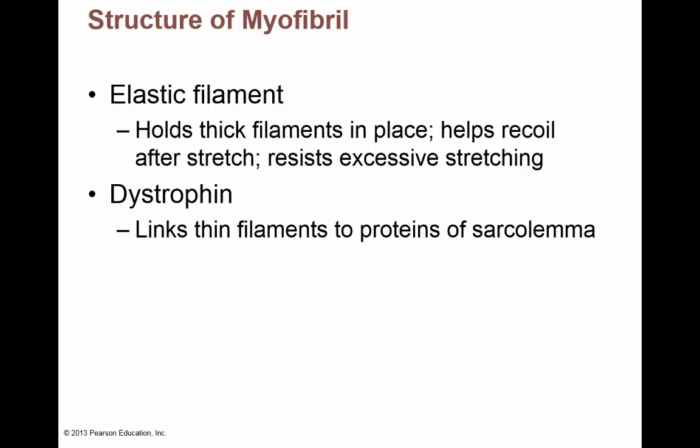The elastic filament is titin — it helps hold thick filaments in place and helps recoil after stretching, resisting excessive overstretching of muscles. Like a little elastic cord. There's also dystrophin — a protein that anchors the thin filaments (actin) to proteins of the sarcolemma, the muscle cell membrane. Dystrophin keeps everything anchored to the muscle cell membrane so nothing is loose inside the muscle cell.